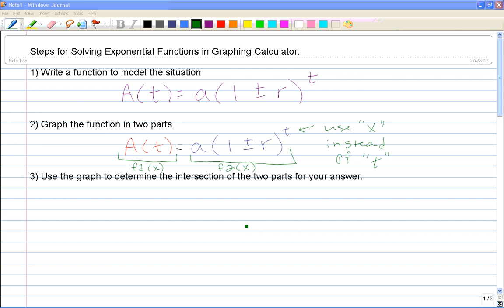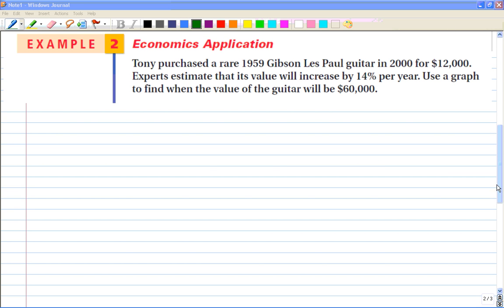So let's look at an example. This is example two in your textbook. Tony purchased a rare 1959 Gibson Les Paul guitar in 2000 for $12,000. Experts estimate that its value will increase by 14% each year. Use a graph to find when the value of the guitar will be $60,000.